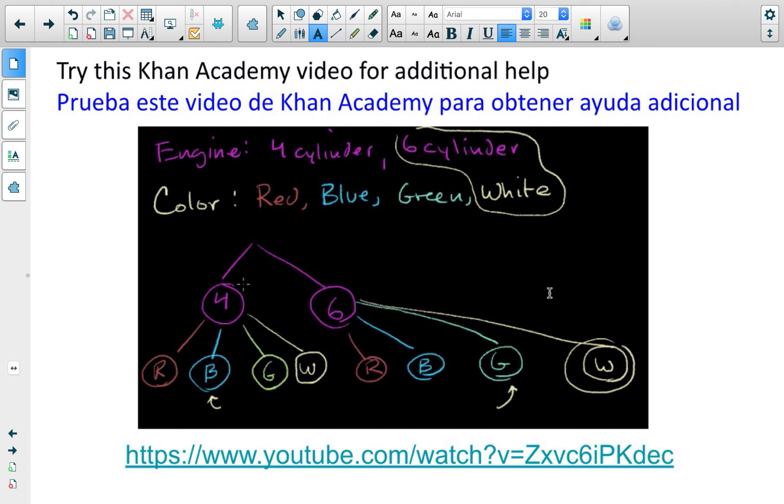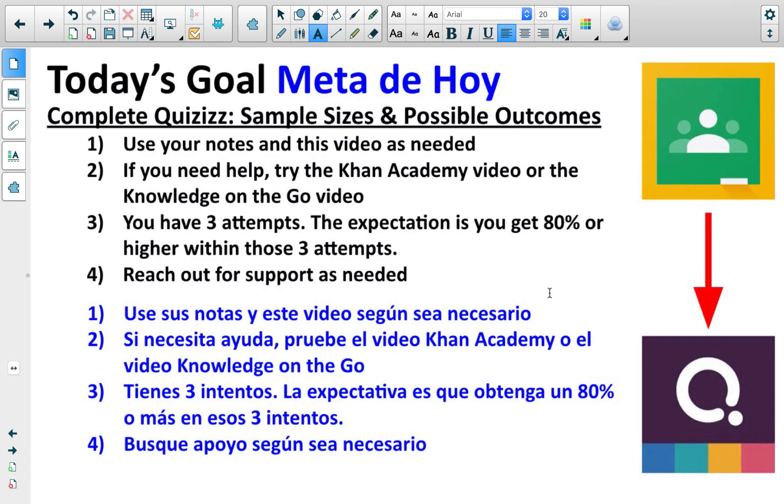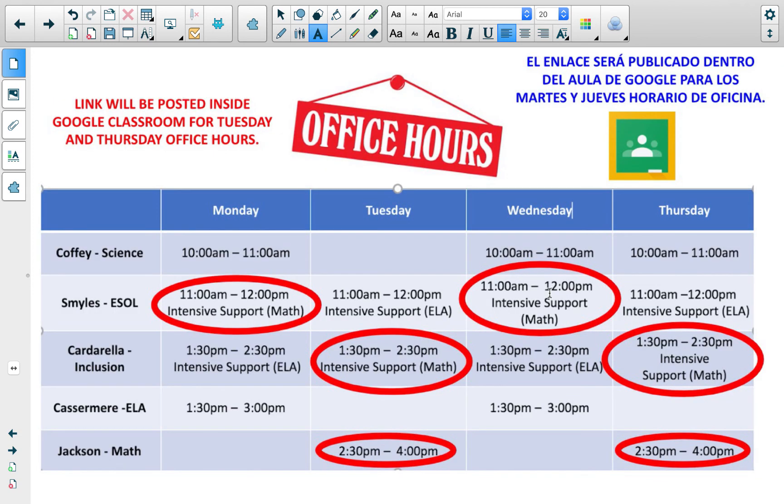If you need additional help specifically with tree diagrams, please consult the Khan Academy video. A lot of your quiz questions today are going to directly deal with the utilization of those tree diagrams. So you need to complete the quizzes titled Sample Sizes and Possible Outcomes. Same expectations as they have been. Please reach out for support as needed. And with that said, this is a reminder of office hours. You need to use them, particularly if you know you are struggling.